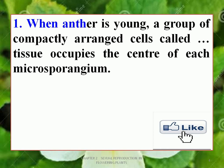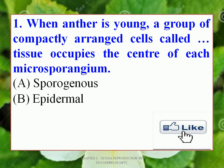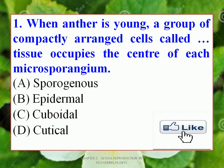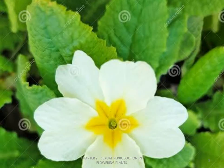Question 1: When the anther is young, a group of compactly arranged cells called DASH tissue occupies the center of each microsporangium. Options: A. Sporogenous, B. Epidermal, C. Cuboidal, D. Cuticle. The correct option is A — Sporogenous Tissue. When the anther is young, a group of compactly arranged cells called sporogenous tissue occupies the center of each microsporangium.